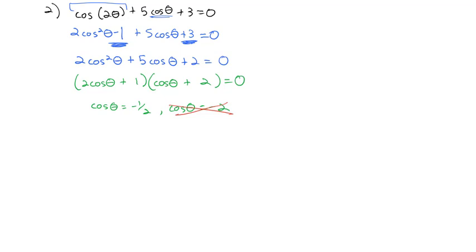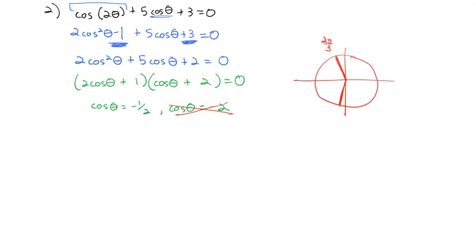I just need to decide when cosθ = −1/2. Cosine is the x-coordinate, and I want a short negative x-coordinate of −1/2, which are the angles just off vertical to the left — the over-3 angles. That's 2π/3 and 4π/3. So θ = 2π/3 and 4π/3.